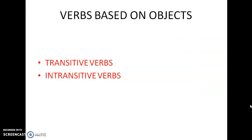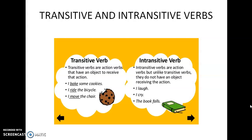Now there are two kinds of verbs based on direct and indirect objects: transitive verbs and intransitive verbs. Transitive verbs are action verbs that have an object to receive the action. Whenever there is an object in a sentence, those verbs are known as transitive verbs. 'I bake some cookies' — verb is bake, what do I bake? Cookies — there is a direct object, so bake is a transitive verb. 'I ride the bicycle' — what do I ride? Bicycle — so ride is a transitive verb. 'I move the chair' — what am I moving? Chair — there is an object, so move is a transitive verb. All verbs that have an object after them are transitive verbs.